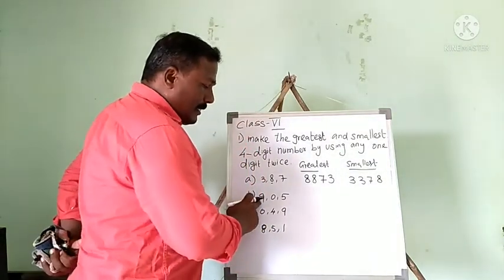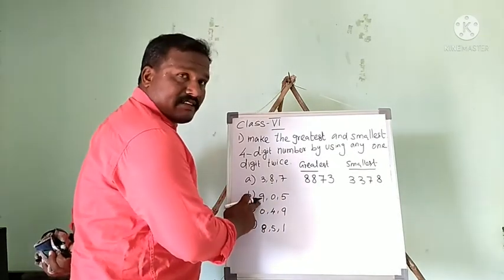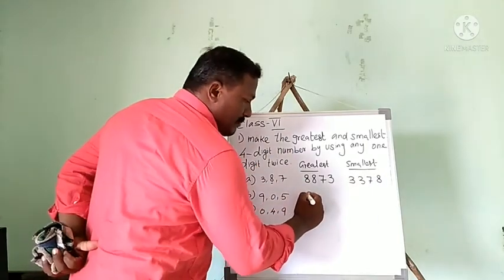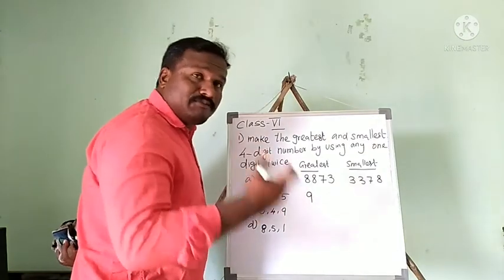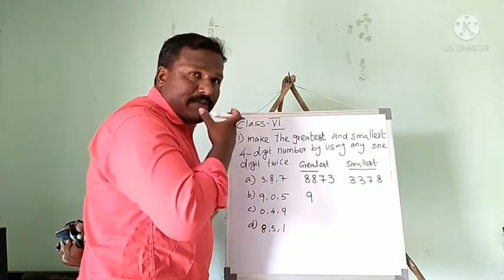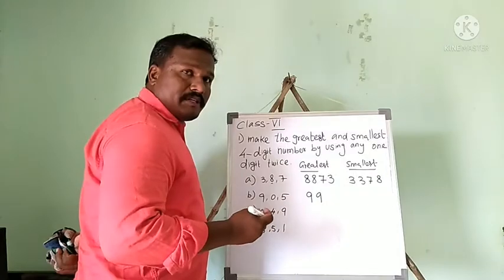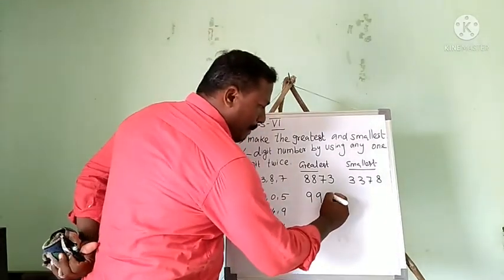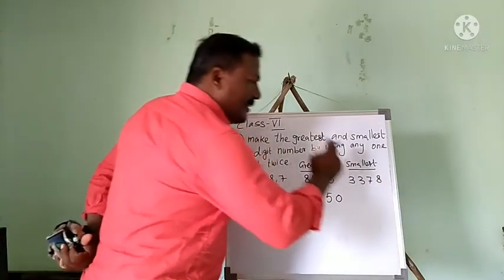Now the second example with digits 9, 5, 0. First the greatest number — descending order, so the biggest digit 9 goes first. Since we need a four-digit number, I write 9 two times, then the next number 5, then 0. So the greatest four-digit number is 9950.